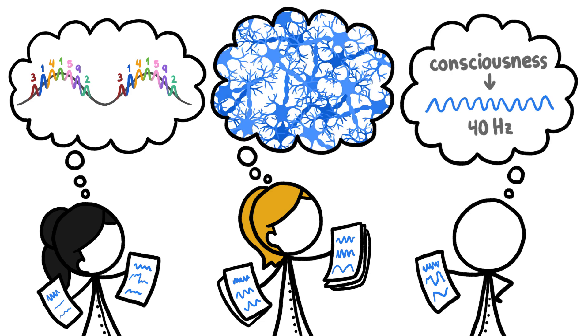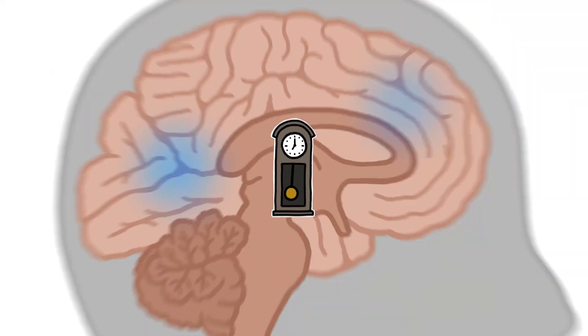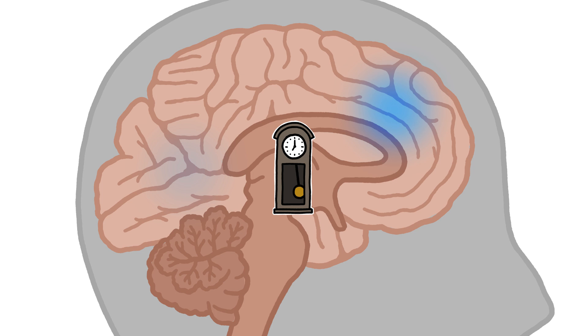Or maybe the rhythms in our brains are even more important than that. Maybe their main function is to keep time for the brain, to keep all the parts sufficiently synchronized so that they can work together.